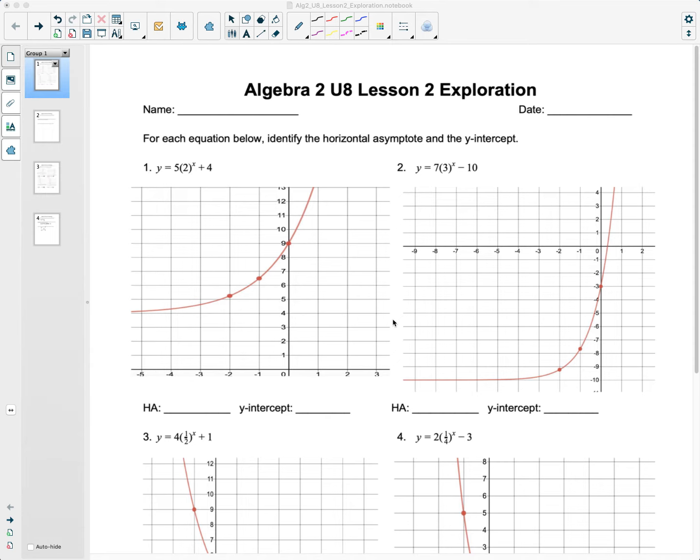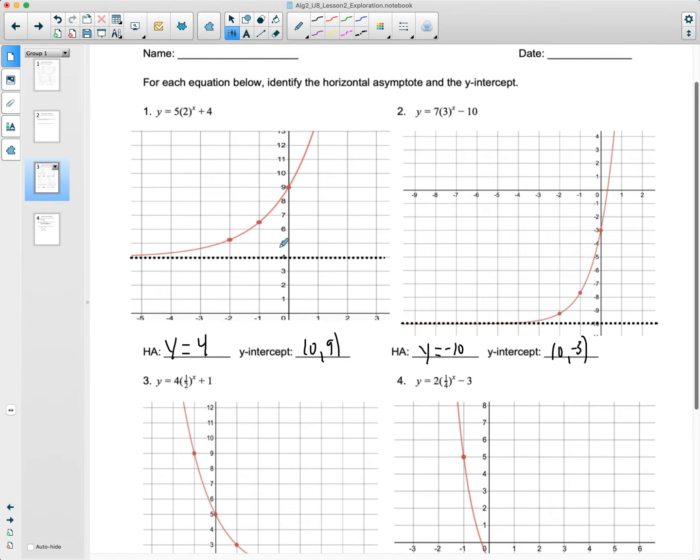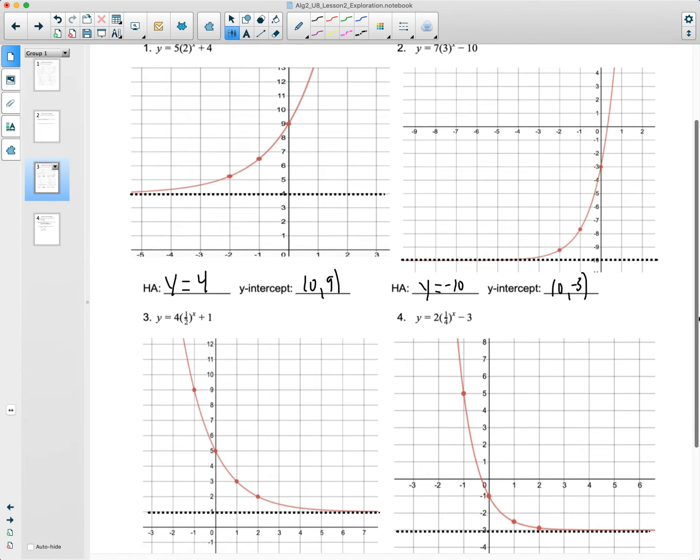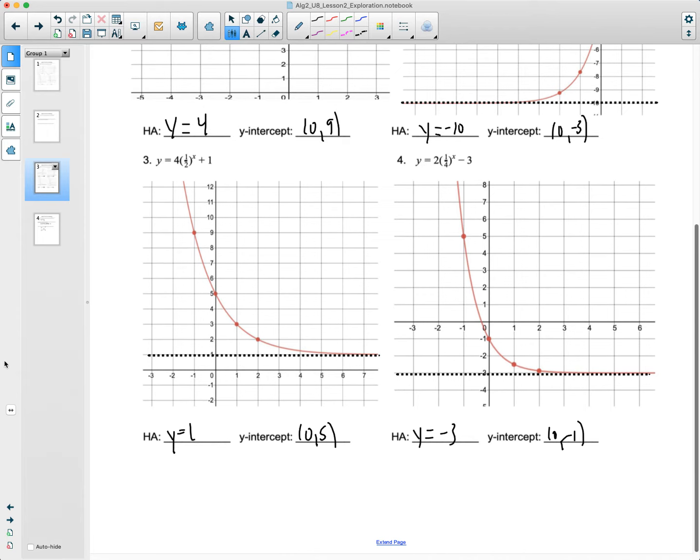Alright, so what I'm going to do is this. I'm going to go to my work here, and so as you look at our graphs here, alright, hopefully you saw that the horizontal asymptote is y equals 4, and one of the connections is I see the plus 4 up here, right? My horizontal asymptote is negative 10. I see that up here, right? Same thing in our two graphs down here, right? So y equals 1, I can see the one up here. Y equals negative 3, I can see that here.